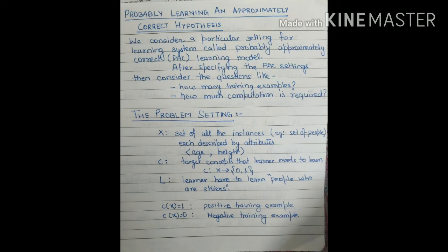Hello everyone. Let's start with the next topic of computational learning theory. The next topic is probably learning an approximately correct hypothesis. In the basic part we have studied that we have to find out how many training examples are enough to ensure that the learner will give you the successful hypothesis. We also have to calculate the computational effort it requires, and calculate the mistake bound. For that we have to study about the probably learning an approximately correct hypothesis, which we can call as PAC hypothesis.